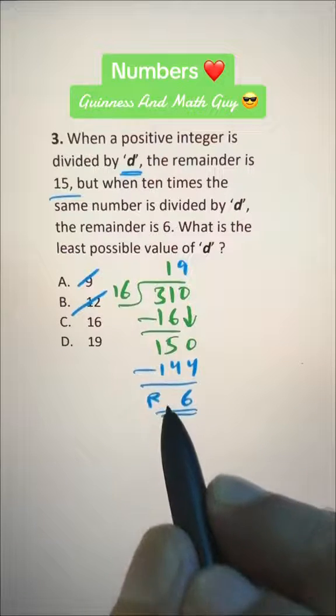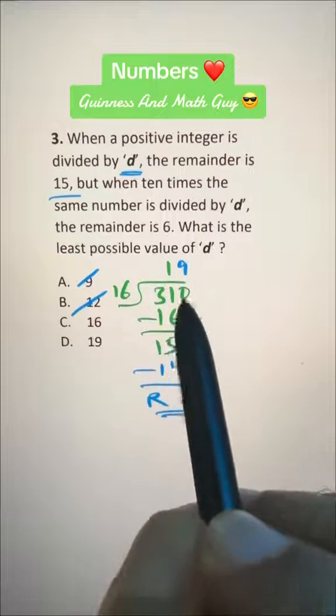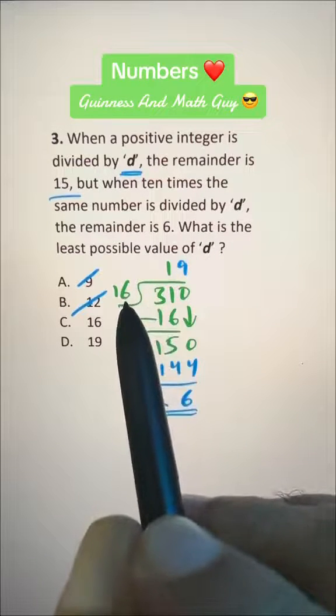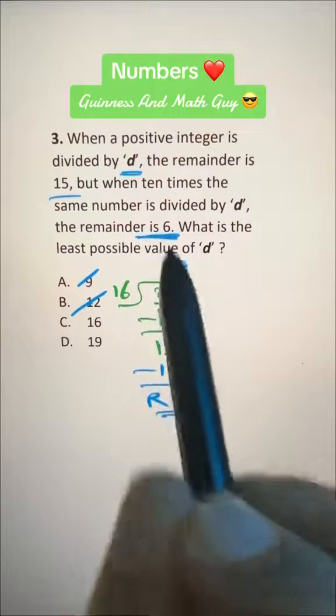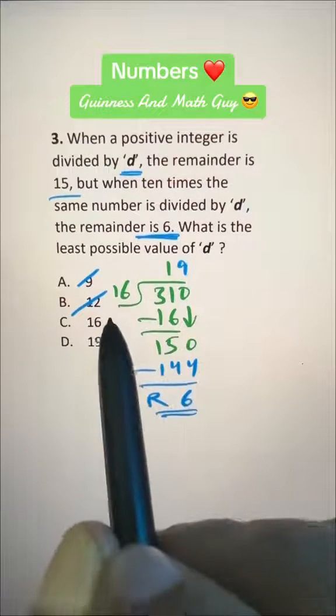So the remainder is 6 when we're dividing 10 times the same number by 16. The remainder is 6, and that's our answer, choice C.